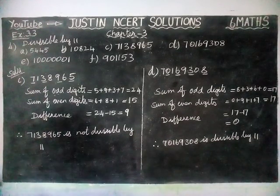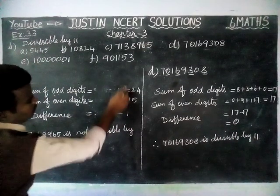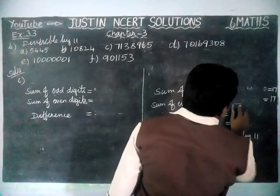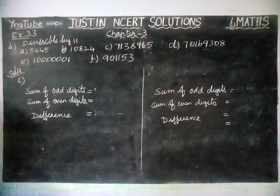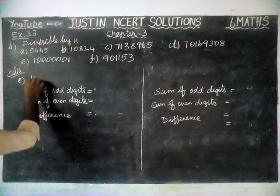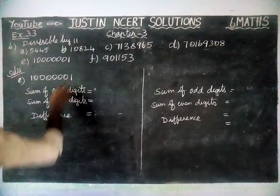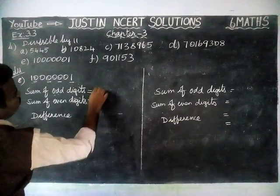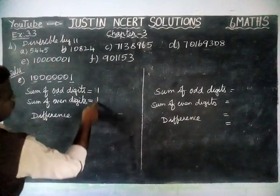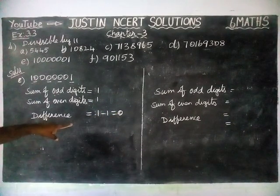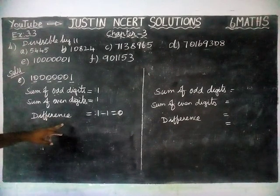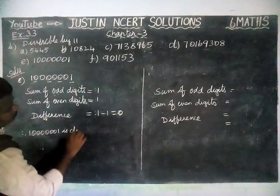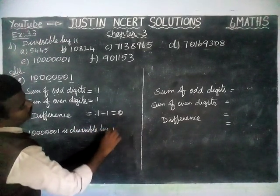Now we are going to check Option E. Sum of odd digits: the odd-position digits sum to 1. Sum of even digits: the even-position digits also sum to 1. The difference between these two is 1 minus 1, which is equal to 0. If the difference is 0 or divisible by 11, that number is divisible by 11. We are getting 0 as the answer. Therefore, the given number is divisible by 11.